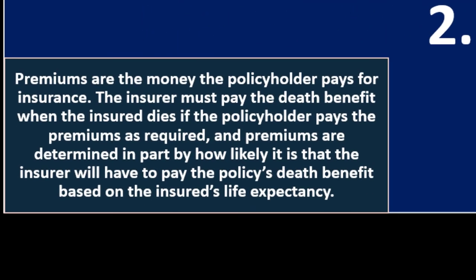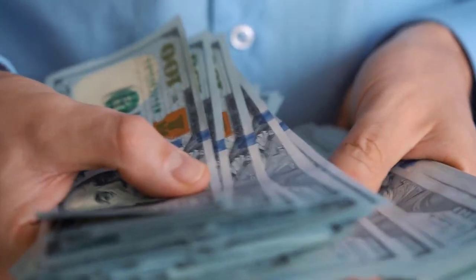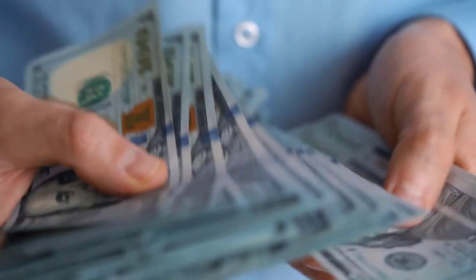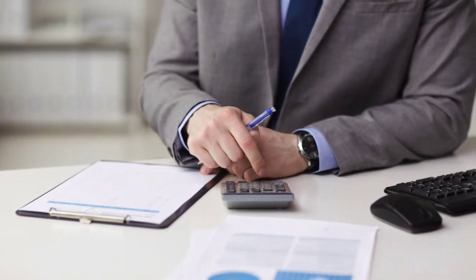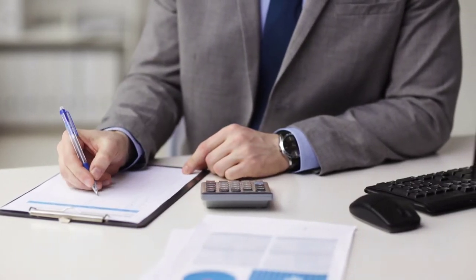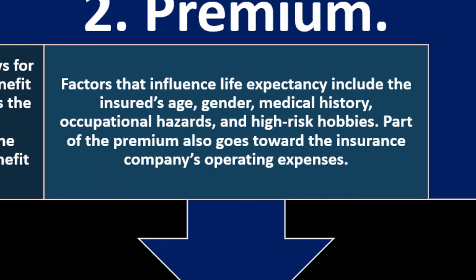The premium is the money the policyholder pays for insurance. The insurer must pay the death benefit when the insured dies if the policyholder pays the premium as required. Premiums are determined in part by how likely it is that the insurer will have to pay the policy's death benefit based on the insured's life expectancy — factoring in actuarial calculations and risk factors. Factors that influence life expectancy include the insured's age, gender, medical history, occupational hazard, and high-risk hobbies.